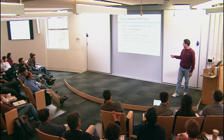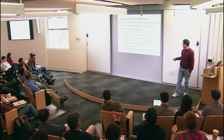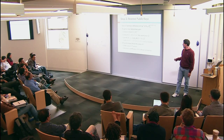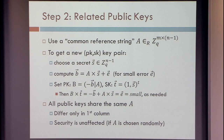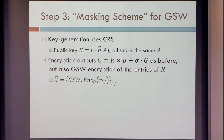All of the public keys are going to have the same A component and only differ in their first column — each one will have their own column. Now we have this, and with that we can start doing things that are a little more interesting. There are four steps so we're almost there — we are in the third out of four steps.